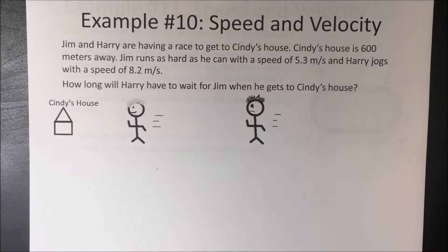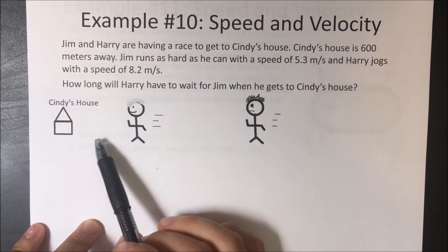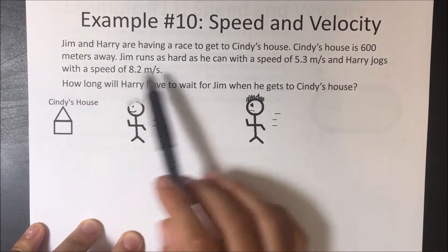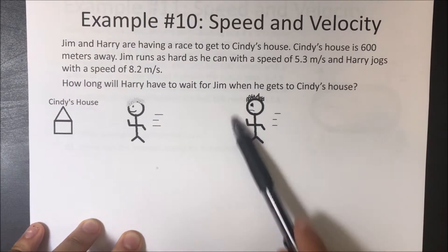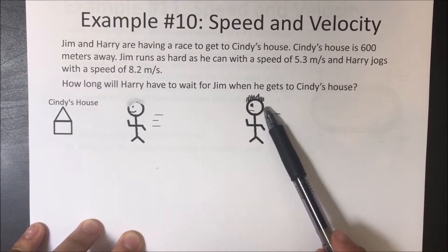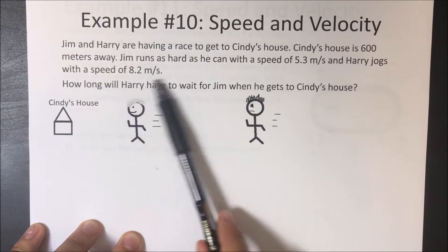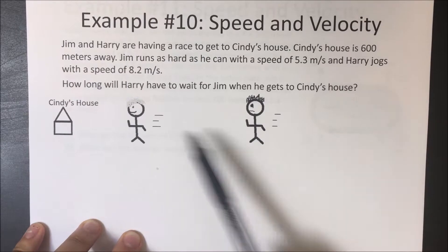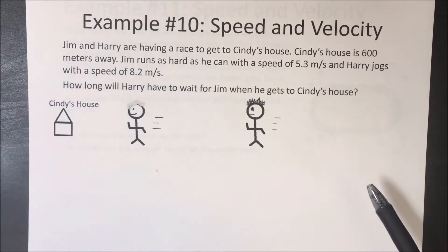Jim and Harry are having a race to get to Cindy's house. Cindy's house is 600 meters away. Jim runs as hard as he can with a speed of 5.3 meters per second, and Harry jogs with a speed of 8.2 meters per second. How long will Harry have to wait for Jim when he gets to Cindy's house?